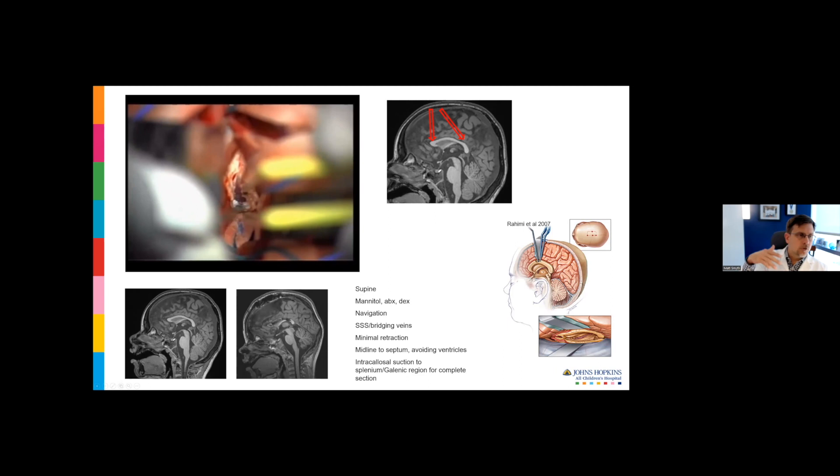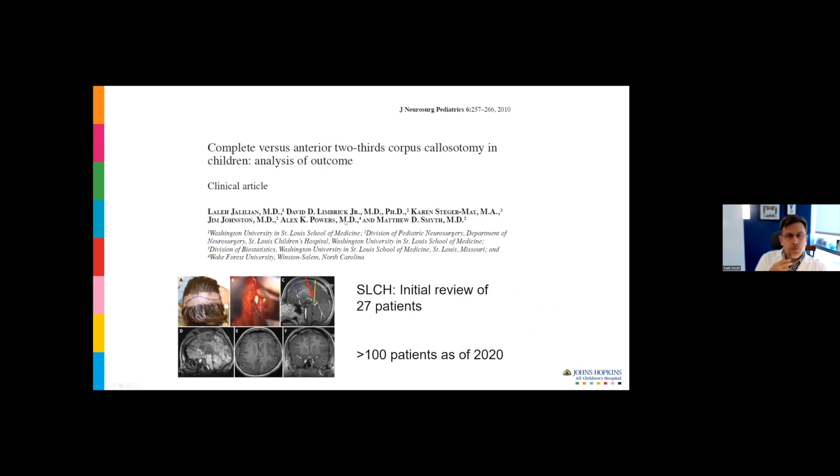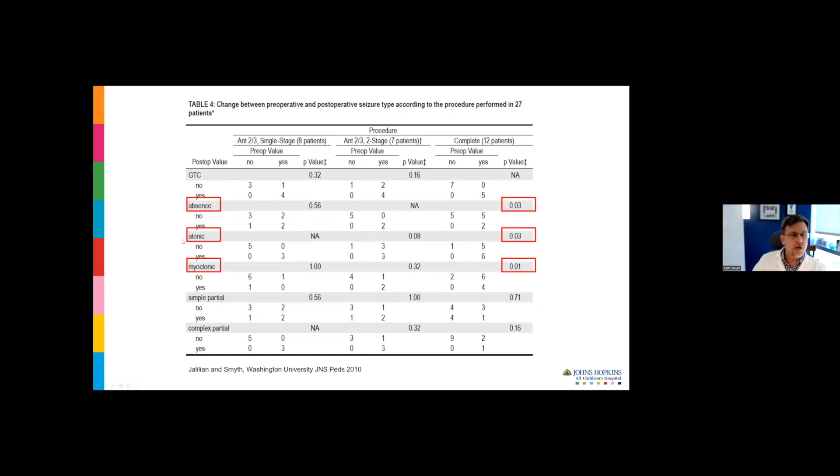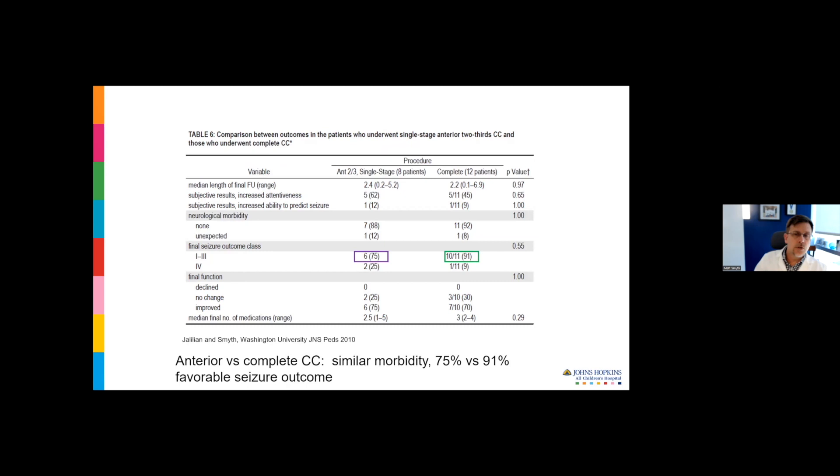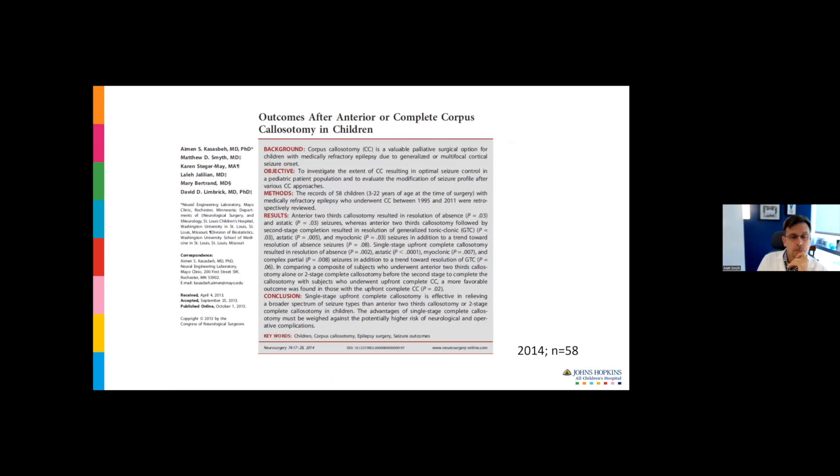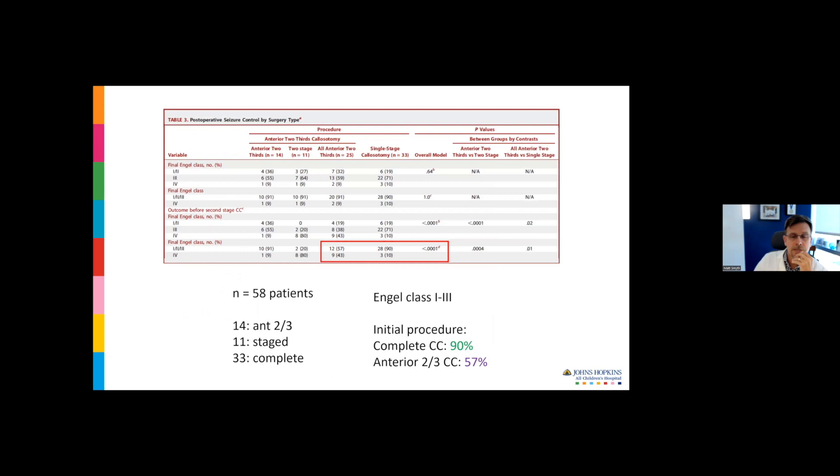If the plan is to do a complete callosotomy, it's a long reach, but you can usually get the entire callosum disconnected through a single anterior craniotomy. The scope is projected posteriorly toward the vein of galen, reaching all the way back to pinch off those posterior fibers. When we started doing this procedure, we did about 25 or 30 patients. What we noticed is that in addition to atonic seizures, other generalized seizure types had significantly reduced post-operative seizure burden. We had 90% favorable seizure outcome if we did a complete callosotomy upfront.